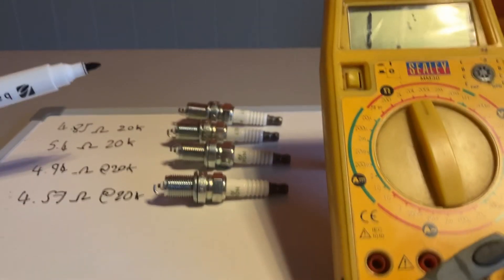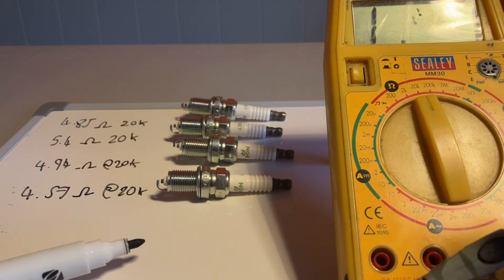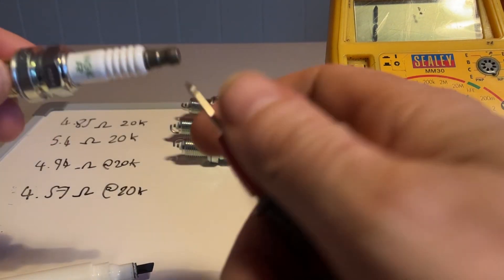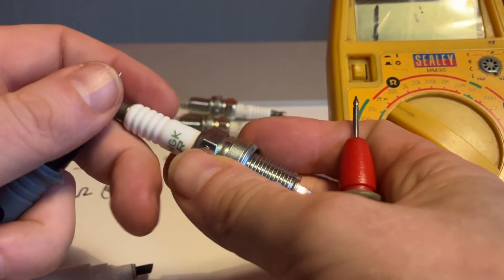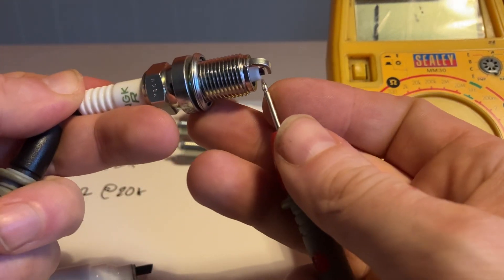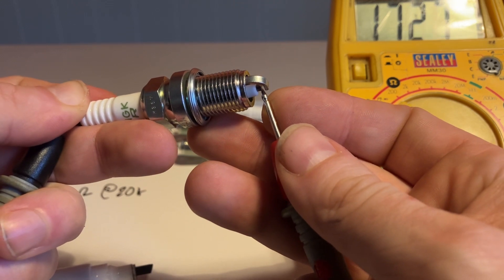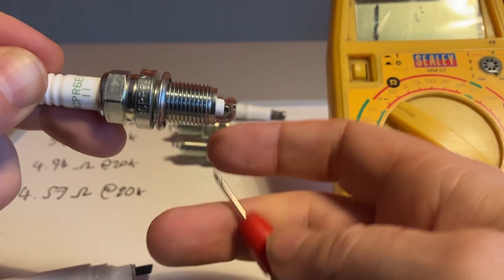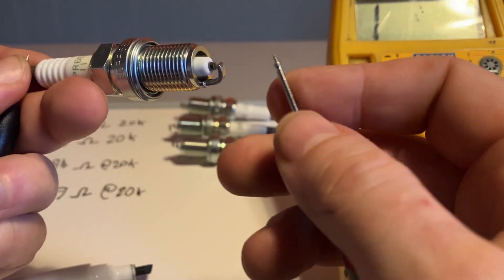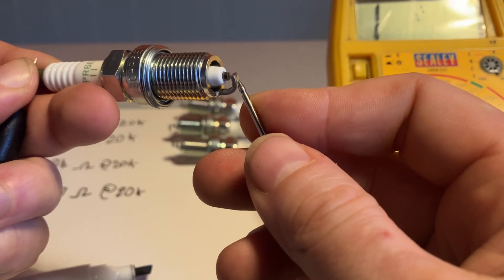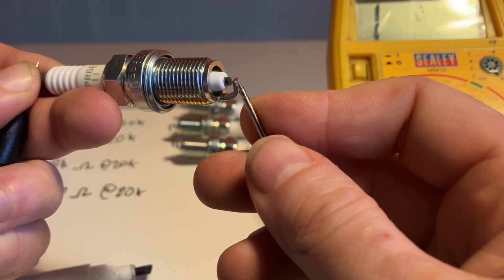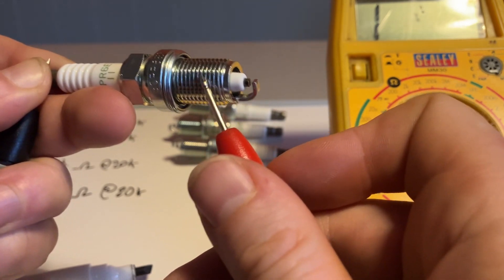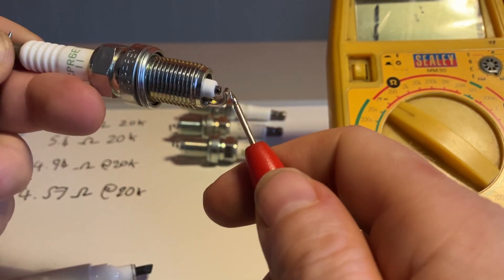One of the tests worth doing if you are testing spark plugs, as I say, if we just set it to continuity, which will just give me a buzz if there's a contact. So if I go between here and here where I had before, it shows it's complete. But what, as I said before, this is the return side of the circuit, so there should be no. If I hold it still here on earth, put it on the live on the other end of the circuit, there should be a zero or a one showing me that there's an open circuit. It should be the same all the way along. There should be no contact because it's two sides of a circuit. So that one's okay.